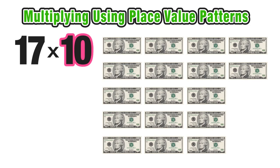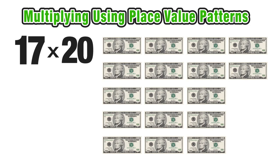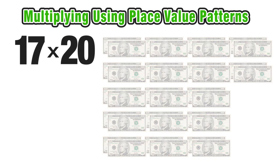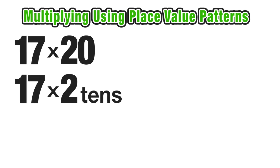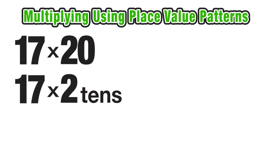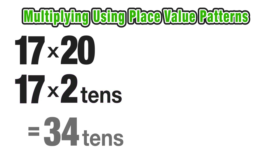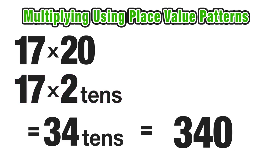What if we replace that 10 with a 20? So now we have 17 times 20. Instead of 17 piles of 10, we have 17 piles of two tens, since two tens equals 20. We can rethink this product as 17 times two tens, since 20 and two tens are equivalent. And 17 times two tens is 34 tens — 17 times 2 is 34 — and 34 ten-dollar bills would be $340.